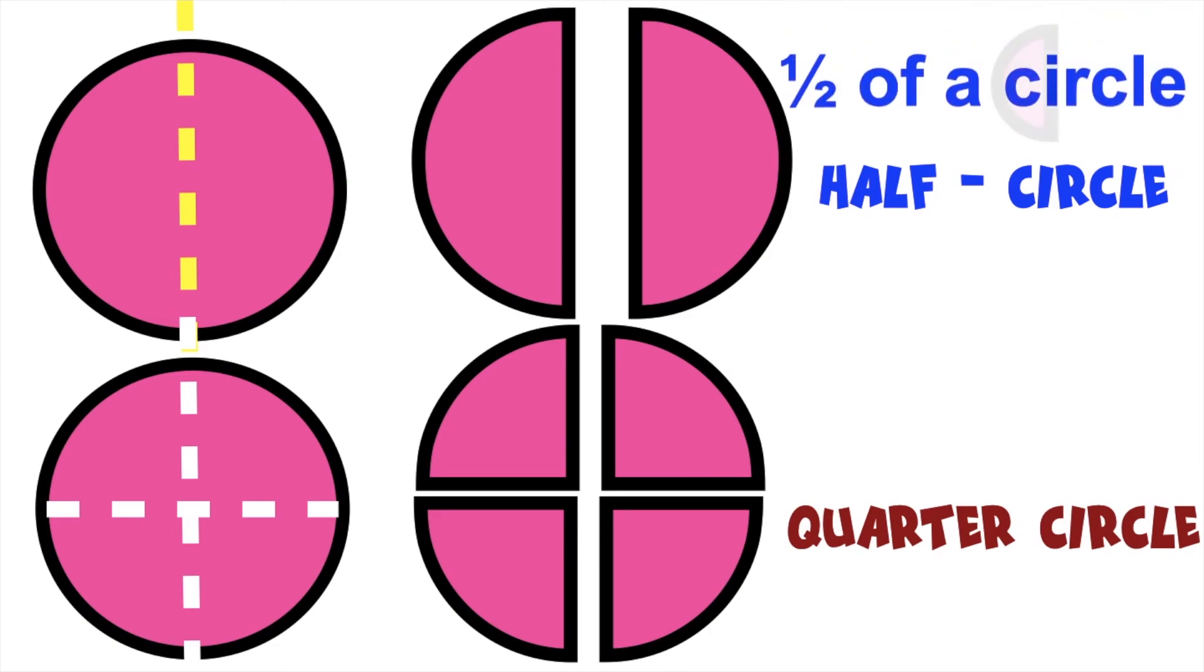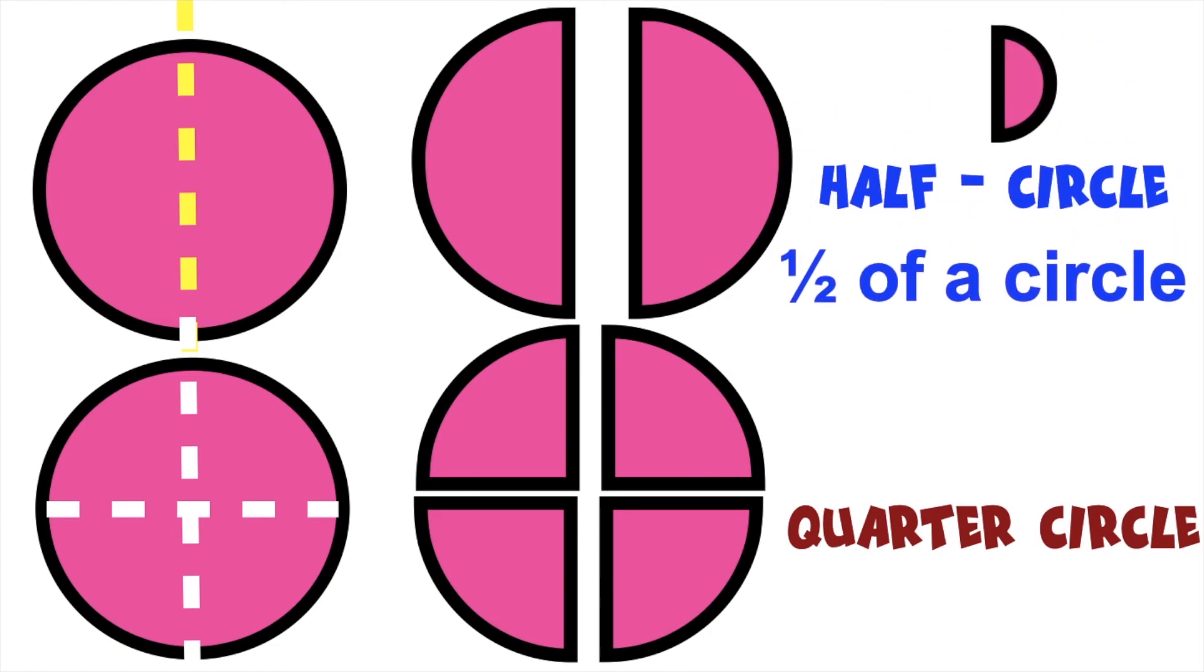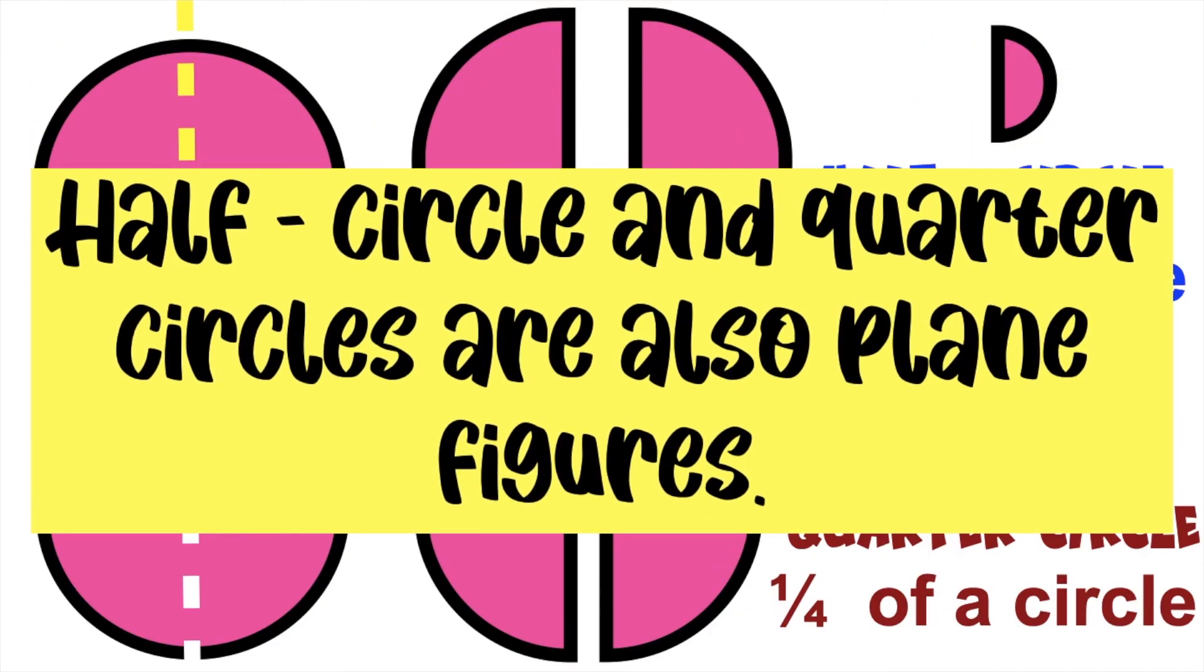When you say half circle, it is one half of a circle. While quarter circle, it is one fourth of a circle. Half circle and quarter circle are also plane figures.